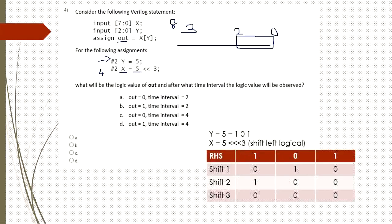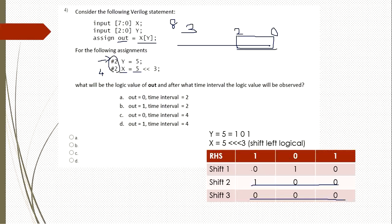The value 5 in binary is 101. Shifting 3 bits left gives a result where the last 3 bits become 0-0-0. Since we are taking only the first 3 bits of X, the output will be 0 after 4 time units. Therefore, C is the correct answer.